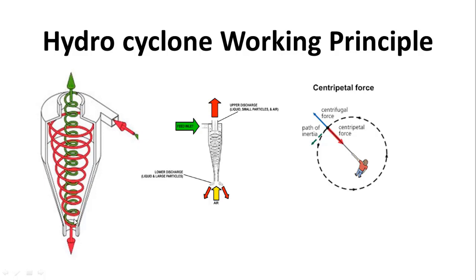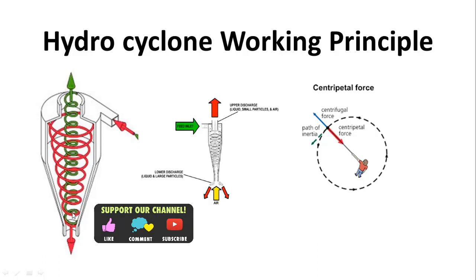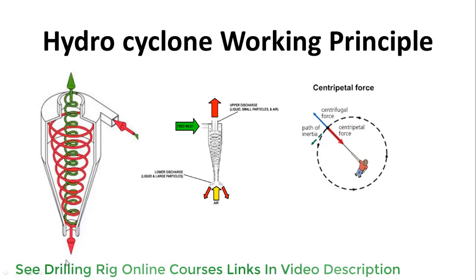The spiral motion continues downward until a certain point in the cone where there is no more spiral motion — this point is called the dead zone. Because of the spiral motion of the fluid downward, a light fluid column is created in the middle of the spiral and a vacuum effect is created. Air from the upper opening enters inside the cone and another spiral movement of the fluid is created upward, exiting from the upper opening.